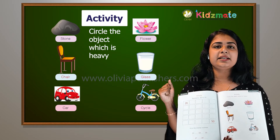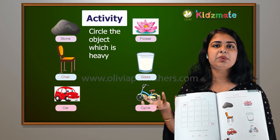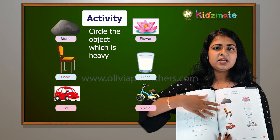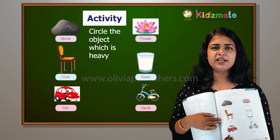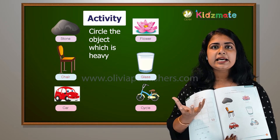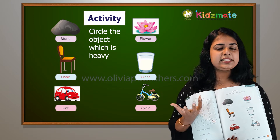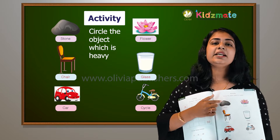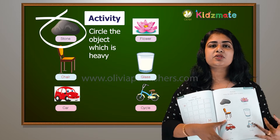What is the heavy object? That is the weight of the object. What is the weight of the object? If you have a stone and a flower, which is heavier here? Stone. What is the heavy? Stone.